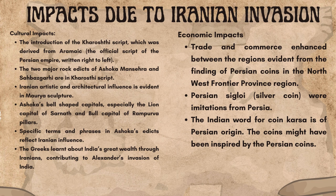Economic impacts include trade and commerce enhanced between the regions, evident from the finding of Persian coins in the northwest frontier province region. Persian siglo, a silver coin, were imitations from Persia. The Indian word for coin, karsa, is of Persian origin, and Indian coins might have been inspired by Persian coins.